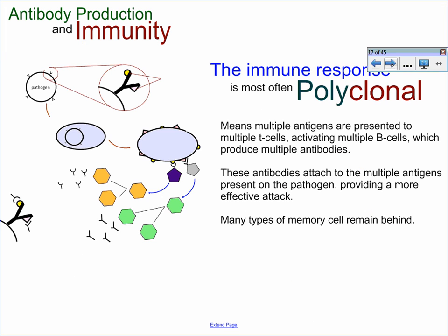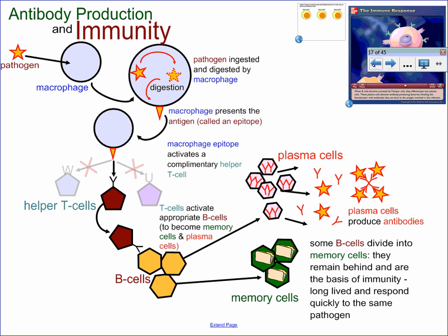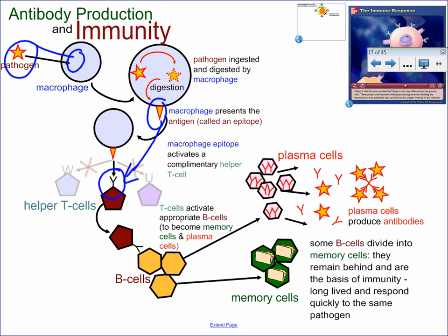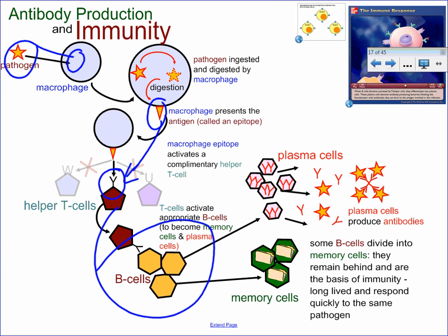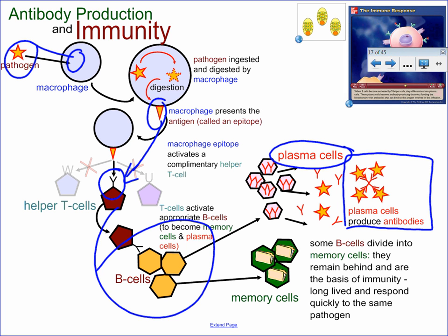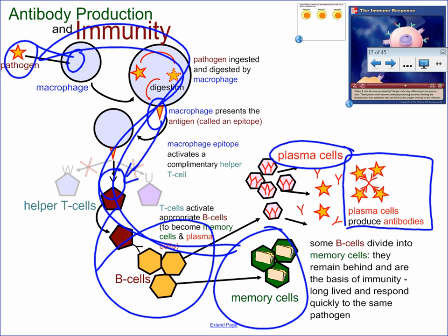This leads us to the larger idea of the whole immune response. A pathogen is ingested by a macrophage, where it is digested, and the macrophage then wears the antigen like a little hat called the epitope. That epitope signals a particular T cell with the appropriate complementary cellular protein to then activate an appropriate B cell. B cells do one of two things: they differentiate into plasma cells — the antibody factories — which produce antibodies specific to that pathogen, or they stay behind as memory cells that provide the basis of long-term immunity. Memory cells can very quickly become plasma cells should they encounter another pathogen in the future.